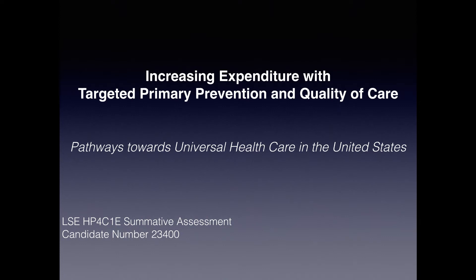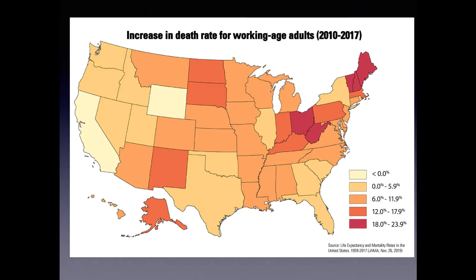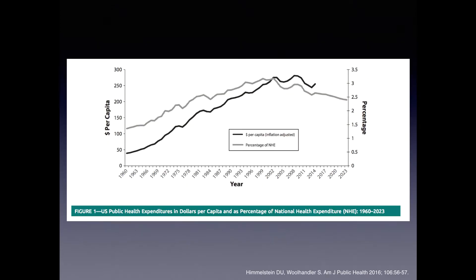Increasing expenditure with targeted primary prevention and quality of care. There is no other country in the world expending more in health care than the United States. Increased spending in the U.S. has not been translated into improved life expectancy as compared to other high-income countries. The majority of health care expenditure among the U.S. has been primarily attributed to hospital care related conditions and minimally to preventive health care services.